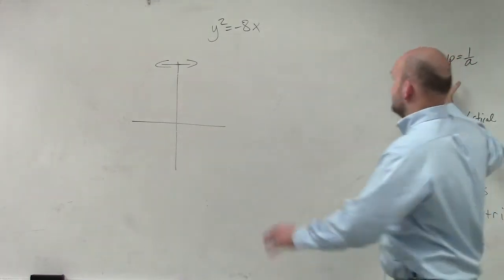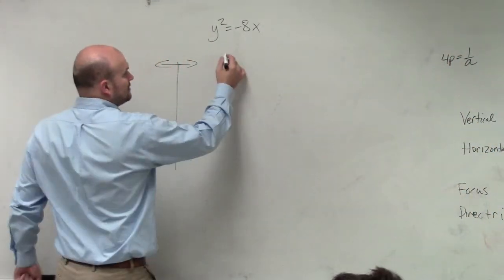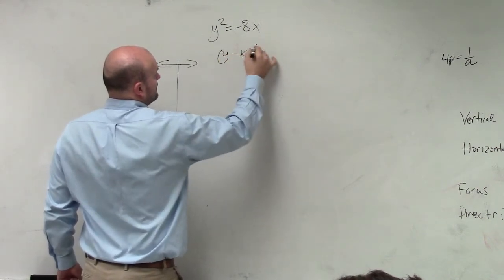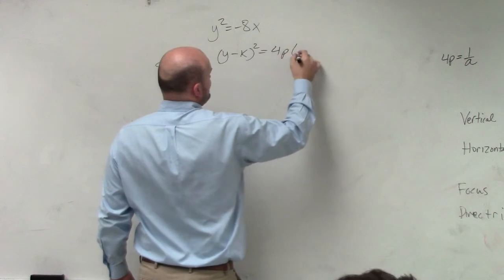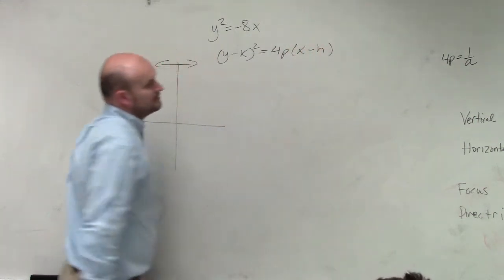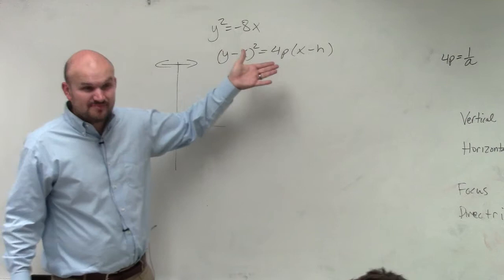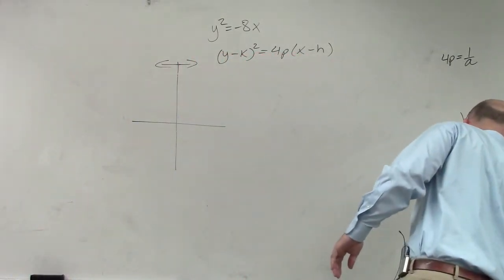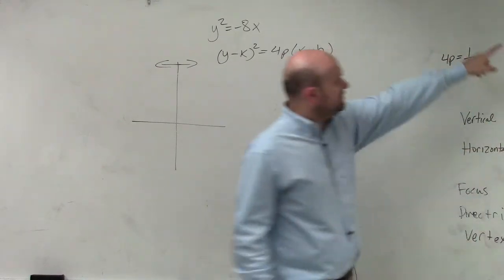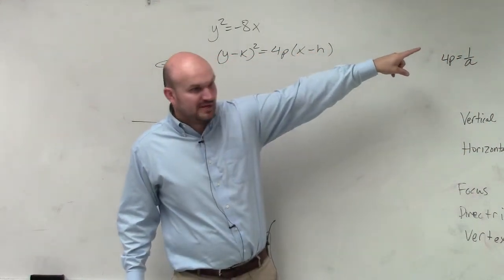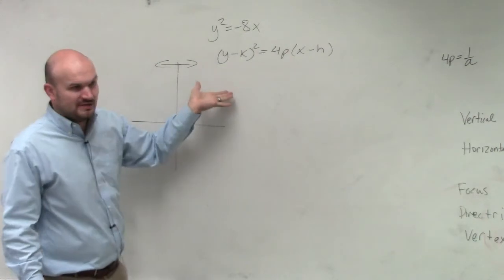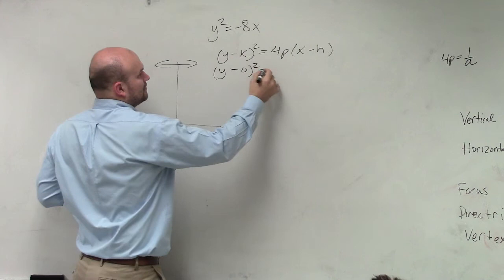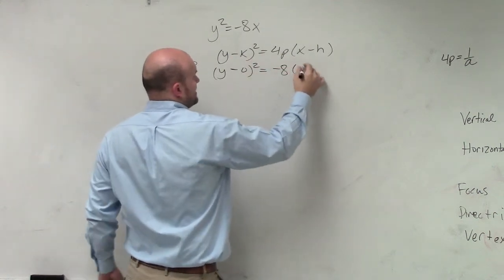Then I want to write this into my horizontal form. So I'm going to write this as y minus k squared equals 4p times x minus h. Now, I need to figure out what my h and k is, because that's my vertex. So I'm going to write this into my form. y minus 0 squared equals negative 8 times x minus 0.